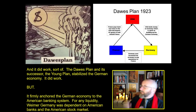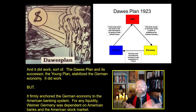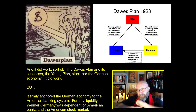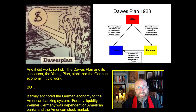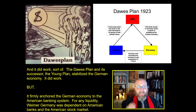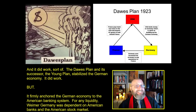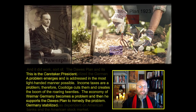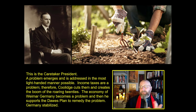The Dawes Plan did work — it sort of worked. Germans were very happy that the Americans showed up to save their economy. The Dawes Plan and its successor, the Young Plan, actually stabilized the German economy and got rid of hyperinflation. But there was a big problem: this firmly anchored the German economy to the American banking system. The entire German economy — and therefore the entire German political structure — became dependent on the stability of American banks and the American stock market.